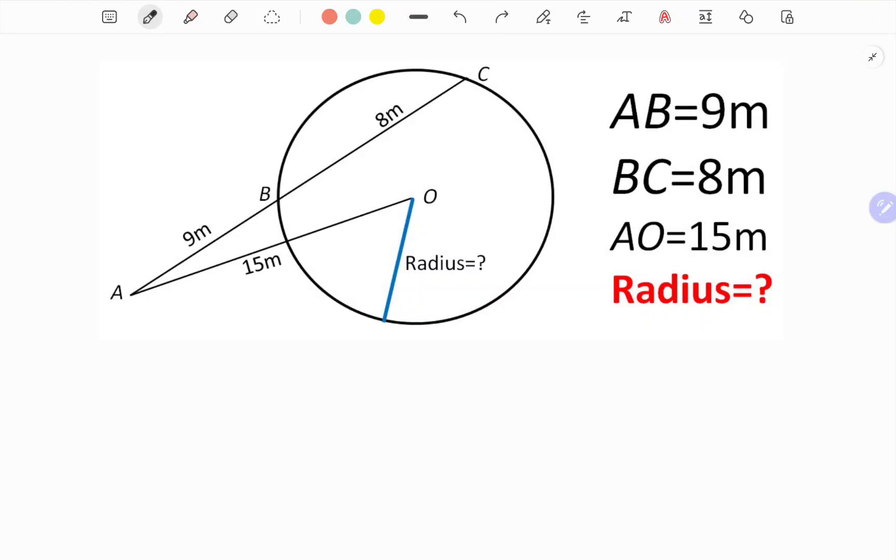Hello everyone, here we have a geometric problem. There is given a circle with center at point O, and there is a point A which is an exterior point. The length OA is equal to 15 meters.